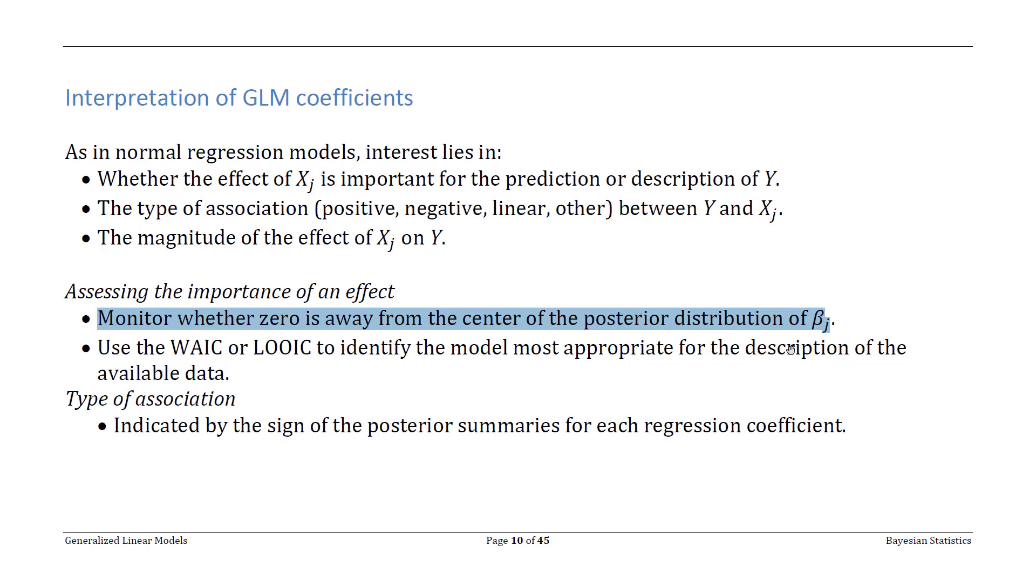95% central posterior interval, is this entire interval above zero or below zero, or is it largely positive or largely negative? We want to know whether there's a high posterior probability that this effect is positive or negative, essentially. And if we have that, then this gives us confidence that this predictor or this effect seems to be important in some way in describing our response variable.